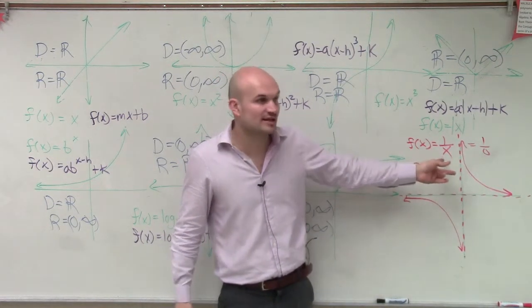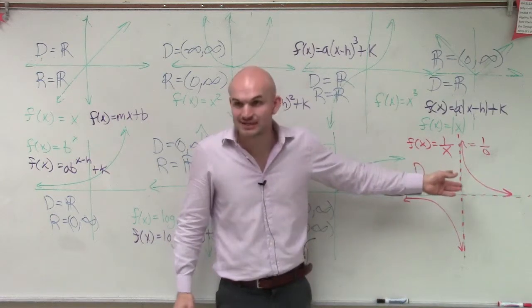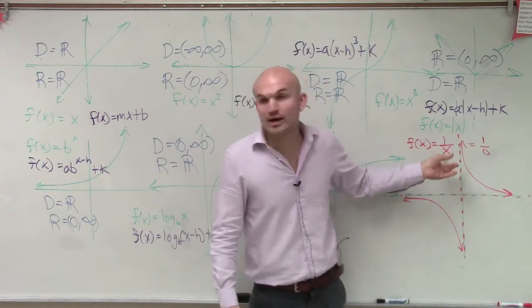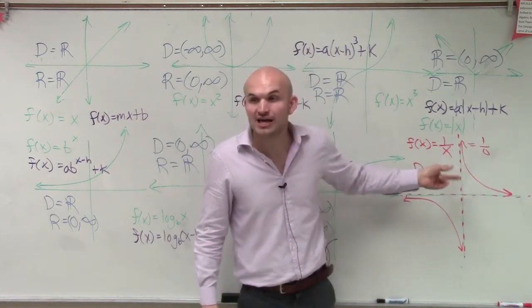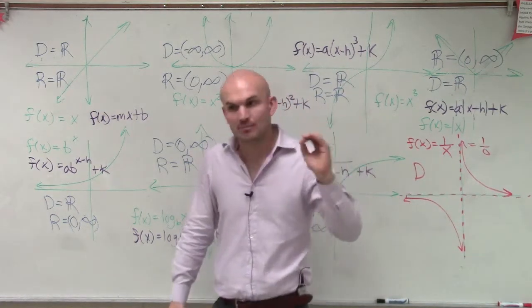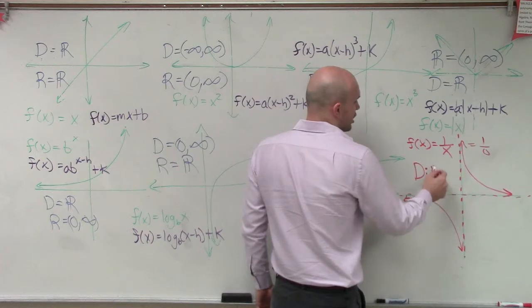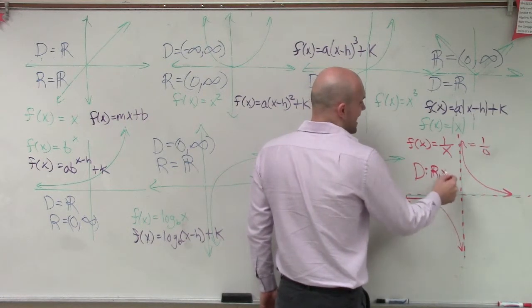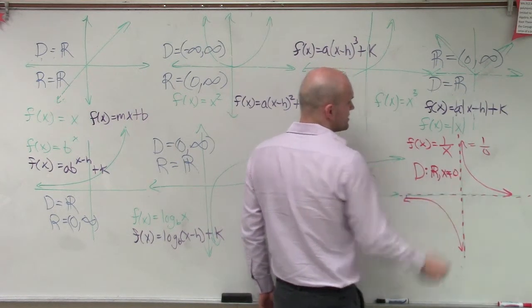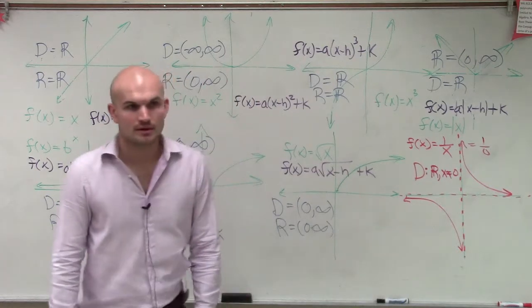1 over negative 1,000, and I can put in 1 over 1 million, I can still value it. But there's one value I cannot plug in for x, which is 0. So our domain is all real numbers, except x cannot equal 0.